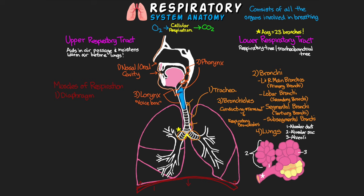For expiration, the diaphragm simply relaxes and the elastic recoil of the thoracic wall causes the thoracic cavity to contract, forcing air back out. The second group of muscles of respiration is the intercostal muscles, found attached between the ribs. These control the width of the rib cage — they contract and pull the lower rib up and outward toward the upper rib, causing the rib cage to rise and aiding in inhalation.